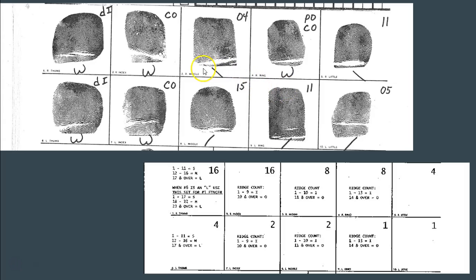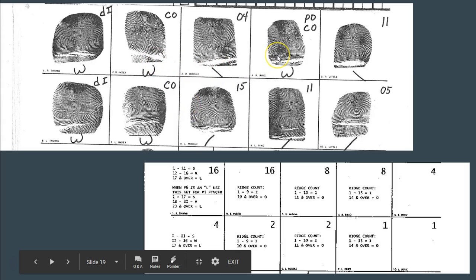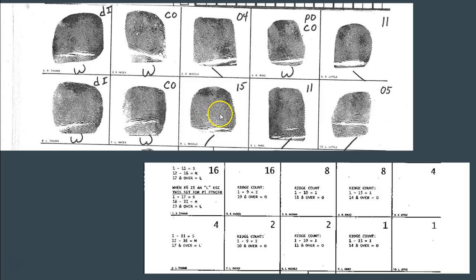The numerator is 29 and the denominator is 19. For the numerator, the even-numbered fingers: finger 2 is a whorl with value 16. Finger 4 is a whorl with value 8, so 16 plus 8 is 24. Finger 6 is a whorl with value 4, so 24 plus 4 is 28. Finger 8 is not a whorl, and finger 10 is also not a whorl, so we add 0 and 0. We have 28, and we always add 1, so our numerator is 29.